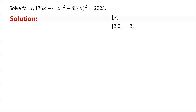For example, the floor of 3.2 is 3. The fractional part function is a function that gives the fractional part of x, by subtracting the greatest integer less than x from x. For example, the fractional part of 3.2 is 0.2.